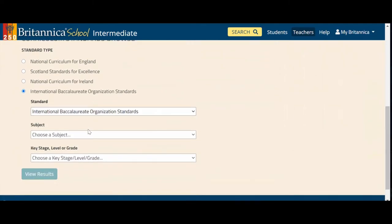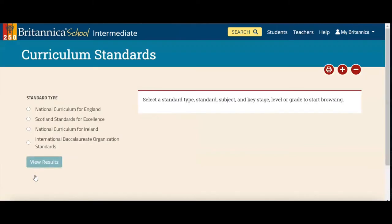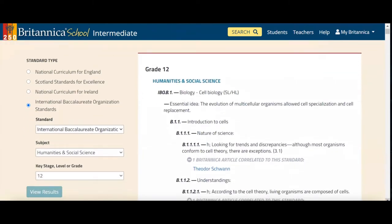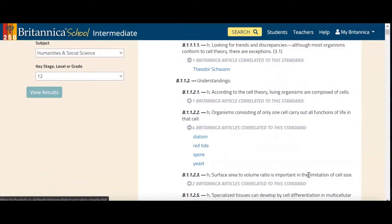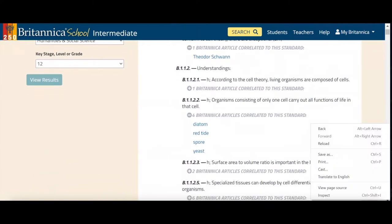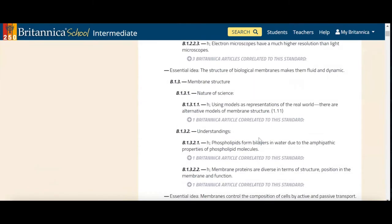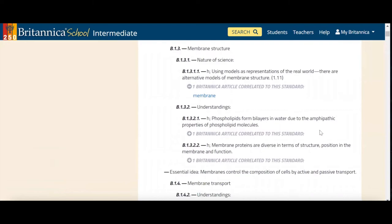So once you click on the International Baccalaureate standards, from here, you can choose a subject. So I'm just going to do humanities and social sciences by random, and let's go into the IBDP grade 12. Once I click on view results, what's really nice now is that I'm seeing the entire curriculum for these particular parameters. And then underneath each strand, you will see related articles. So you can now scroll down, and you can find the perfect article for your class, and then you can begin to look through this article in more depth.